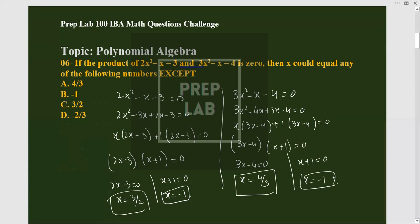So the question asks which value x could NOT equal. Our found values are x=3/2, x=-1, and x=4/3. Checking the answer choices: 3/2 exists, -1 exists, 4/3 exists — but -2 or -2/3 does not appear among our solutions, so that option is the correct answer — that value cannot equal x.